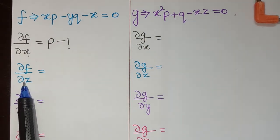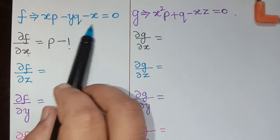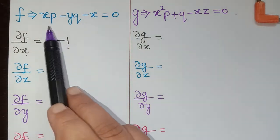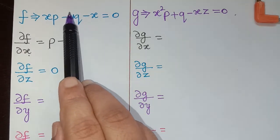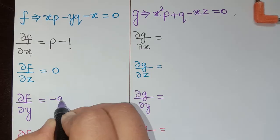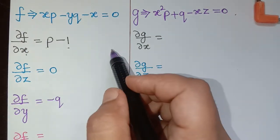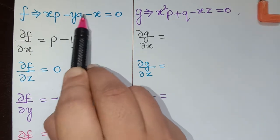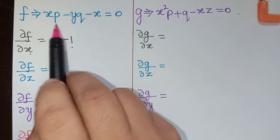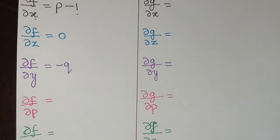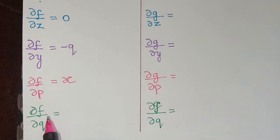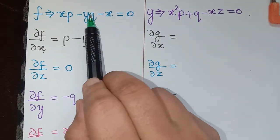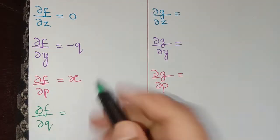∂f/∂z: since there is no z in f, this becomes 0. ∂f/∂y: the xp term becomes 0; differentiating yq gives q, so ∂f/∂y = minus q. ∂f/∂p: the yq and constant terms become 0; differentiating xp with respect to p gives x, so ∂f/∂p = x. ∂f/∂q: the other terms become 0; differentiating minus yq with respect to q gives 1, so ∂f/∂q = minus y.